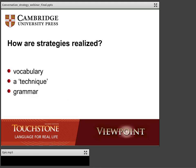Let's move along and think about how strategies are realized. It's one thing to tell students they need to end a conversation politely or soften what they say, but how do we actually do this? Basically, strategies can be realized in one of three ways: through vocabulary, through a technique, or through grammar. We're going to look at each of these in turn.